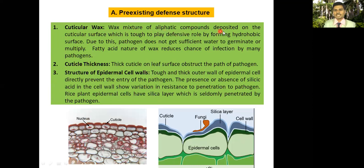Cuticular wax is a mixture of aliphatic compounds deposited on the cuticular surface. It plays a defensive role by forming a hydrophobic — water-repelling — surface. Due to this hydrophobic surface, the pathogen does not get sufficient water to germinate or multiply, and due to scarcity of water the pathogen dies. The fatty acid nature of the wax reduces the chance of infection by many pathogens.